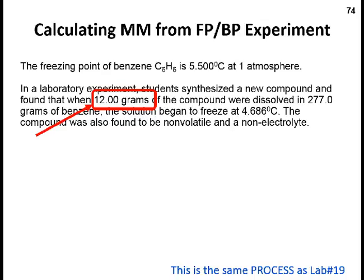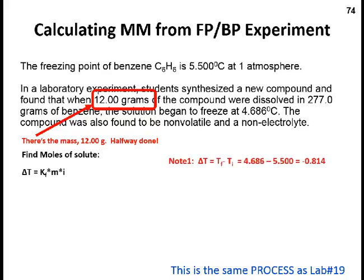We've got the grams, so we're halfway done. Now we just need to figure out how many moles goes with that 12 grams. Using the freezing point depression equation, the change in freezing point can also be found by doing the final temperature minus the initial temperature. When you do that, you get negative 0.814 degrees Celsius in this experiment.